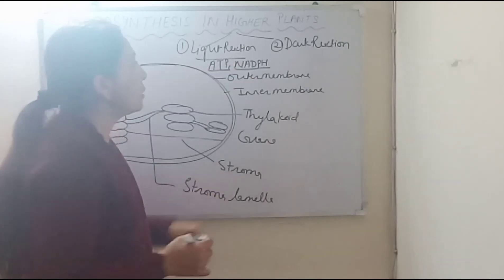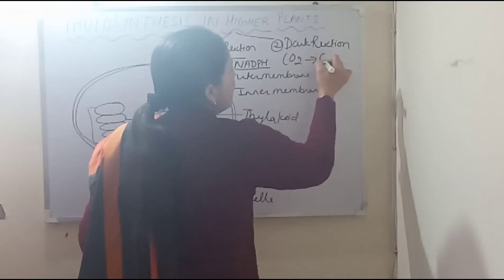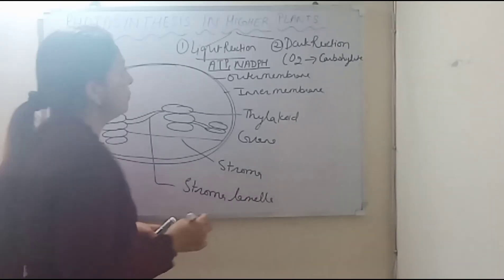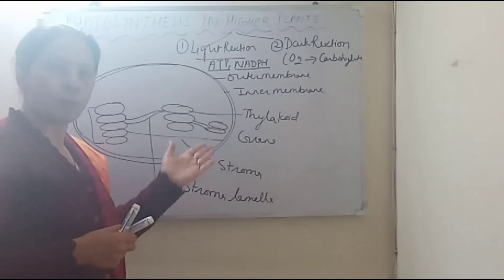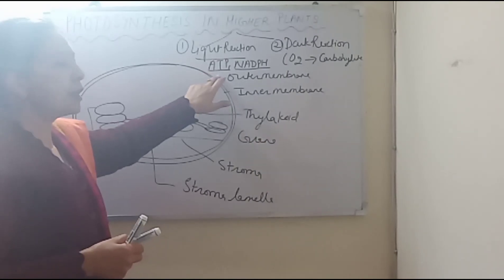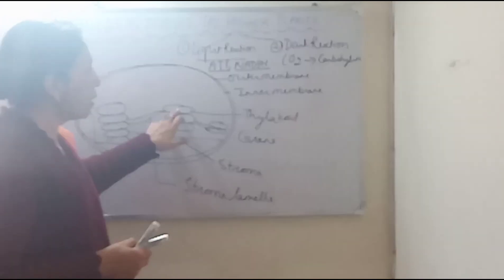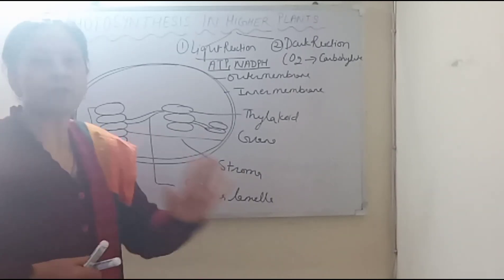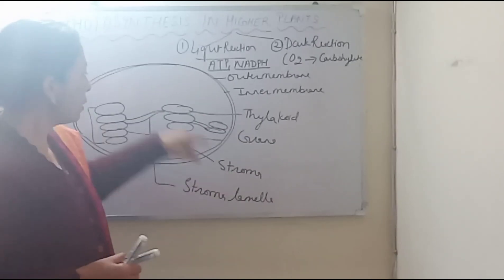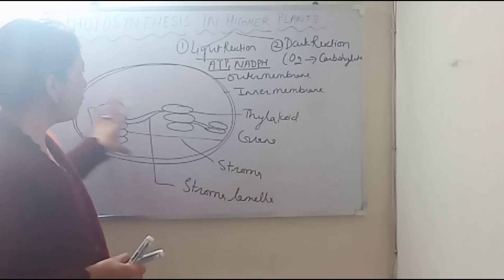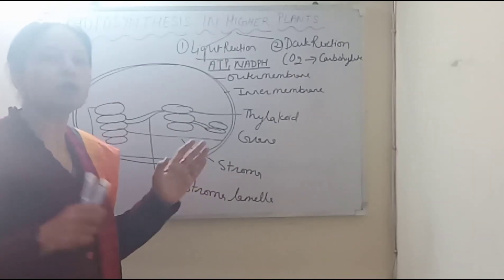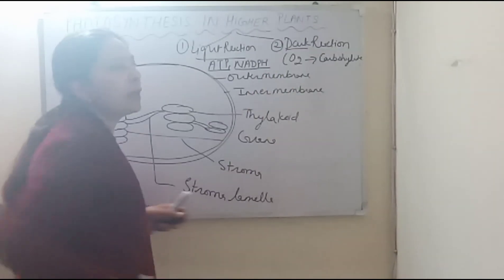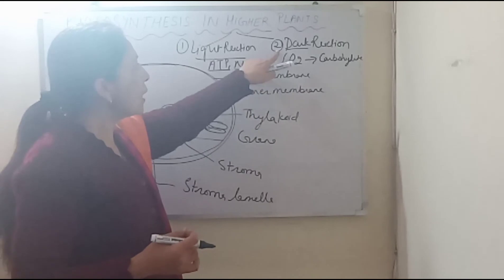And this is the dark reaction, which converts carbon dioxide into carbohydrates. The dark reaction does not mean it will only happen in the dark — it is actually called the light-independent reaction. In the dark reaction, ATP and NADPH produced in the light reaction are used, along with carbon dioxide, to produce food.